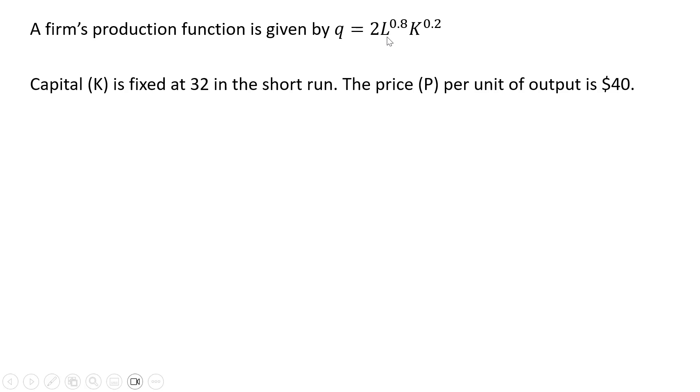L is units of labor, K is units of capital. In the short run, we're going to set K equal to 32, so K is fixed at 32 in the short run. The price per unit of output is $40.